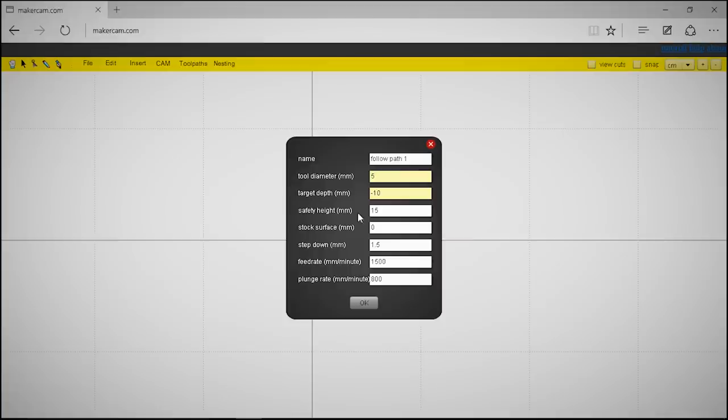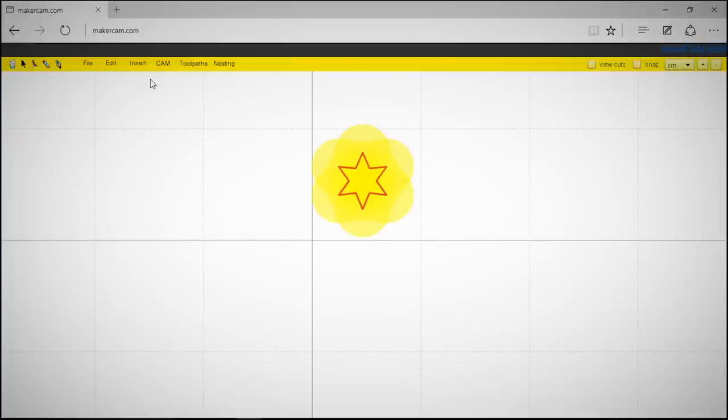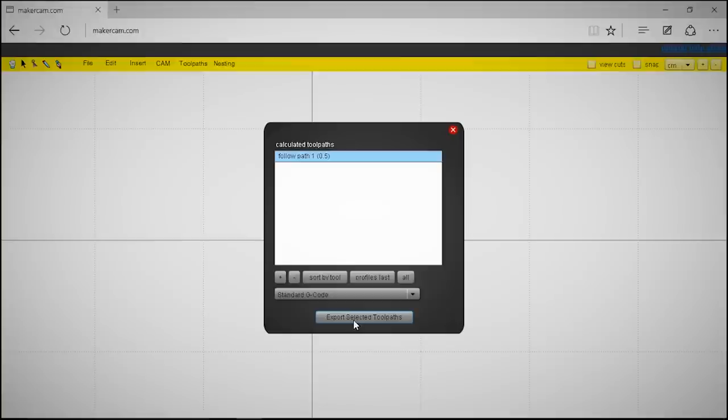Once that's done, go to Cam Follow Path Operation. Set the target depth to negative 1, safety height to 1, and step down to 1. Then click OK. Then go to Cam again and select Calculate All. And finally, go to Cam one last time and select Export G-code.